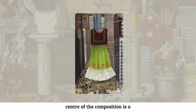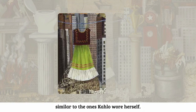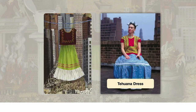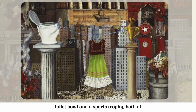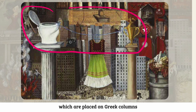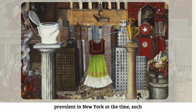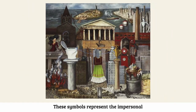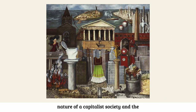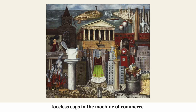At the center of the composition is a traditional Mexican Tijuana dress, similar to the ones Kahlo wore herself. This dress is hung on a string tied to a toilet bowl and a sports trophy, both of which are placed on Greek columns, surrounded by modern symbols prevalent in New York at the time, such as an oversized telephone and gas pumps. These symbols represent the impersonal nature of capitalist society and the way in which people were reduced to faceless cogs in the machine of commerce.